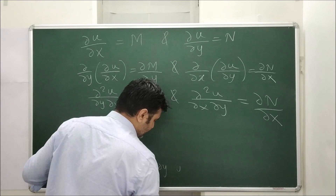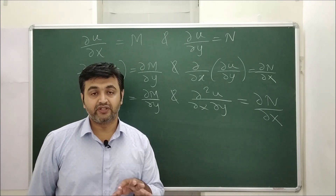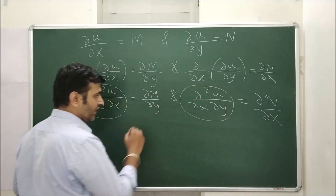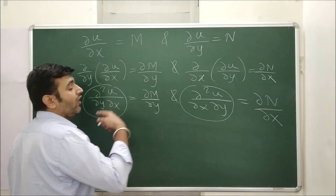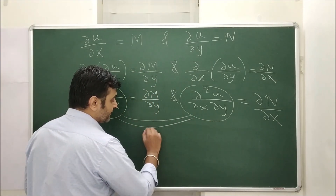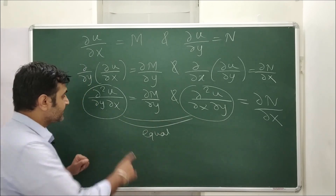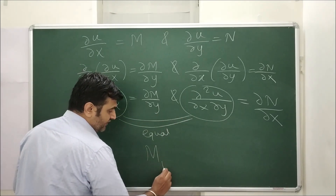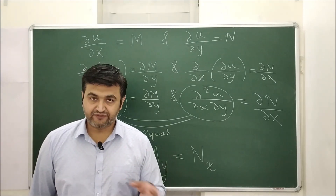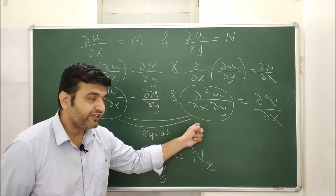In multivariable calculus there is a very nice theorem called the mixed derivative theorem. It states that if u is a differentiable function, then you can differentiate in any order — first with respect to x then y, or first with respect to y then x — and you always get the same answer. Since u is a differentiable function, the two mixed partials are equal, and therefore ∂M/∂y = ∂N/∂x.